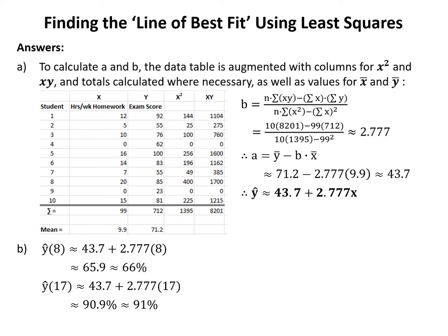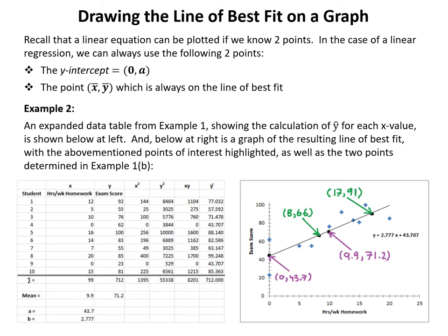In part b we find predicted values for y-hat at x equals 8 and x equals 17. Substituting into the equation: y-hat at 8 equals 43.7 plus 2.777 times 8, which equals 65.9, rounding to 66%. For x equals 17: y-hat at 17 equals 43.7 plus 2.777 times 17, which equals 90.9, rounding to 91%.